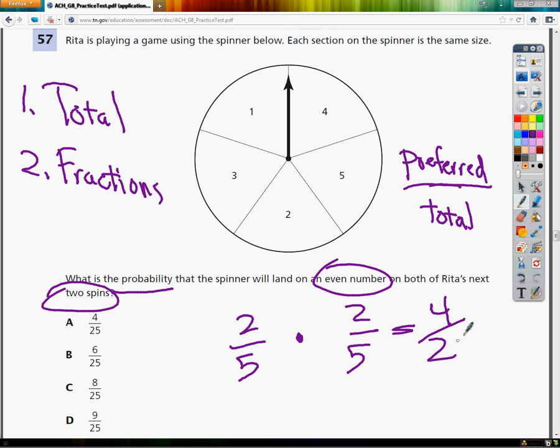And I end up with four over twenty-five. So the answer is right there, it's A. It's a very simple problem.